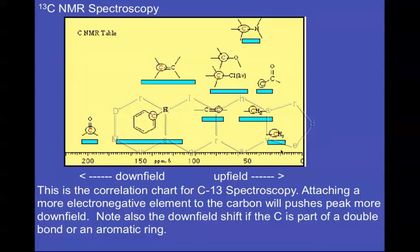Upfield, we have the alkyl Cs. That is, the Cs that don't have anything attached to them except hydrogens. CH3s will be pretty close down here, near 0. The Cs attached to C double bond Os will be around here, about 20 to 30.